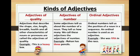Kinds of adjective. First, adjectives of quality. Adjectives that describe the shape, size, length, breadth, health, and all other characteristics of nouns or pronouns are called adjectives of quality. For example: this is a heavy box. Adjectives used to describe the nature of a subject or noun, showing the kind or quality of nouns or pronouns, are called adjectives of quality. They basically answer the question: what kind of?